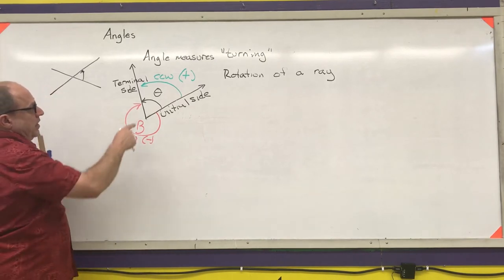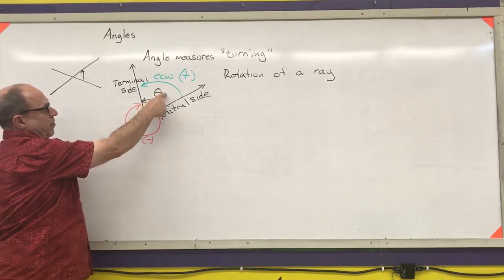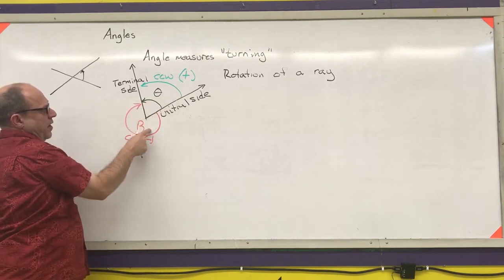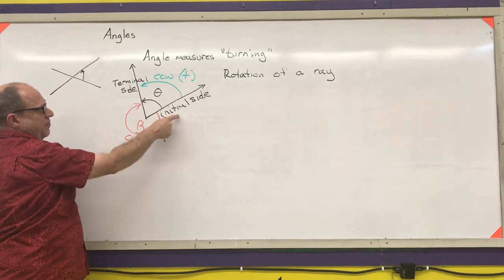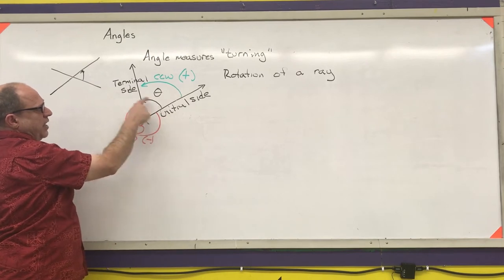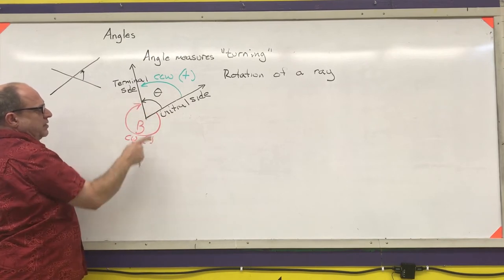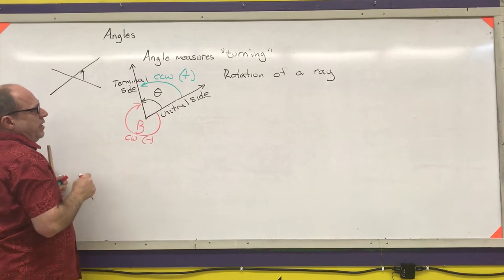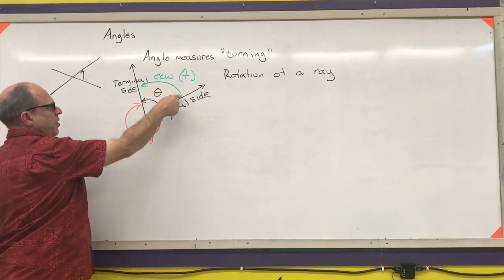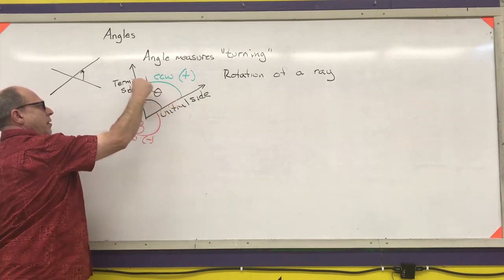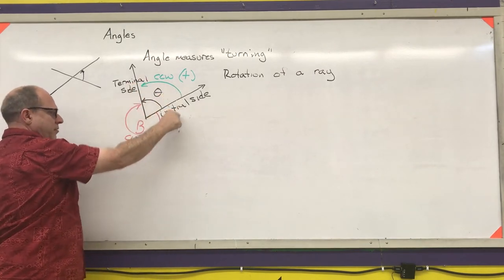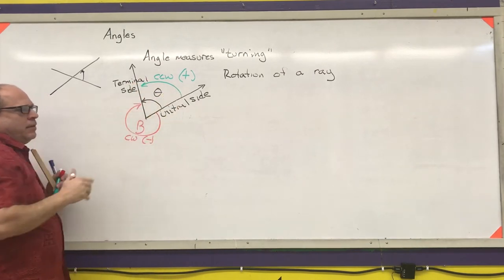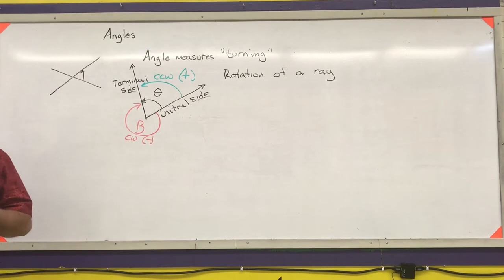Notice that angle theta and angle beta both have the same initial side and same terminal side. What's going to determine what the angle measurement is is whether I'm rotating clockwise or rotating counterclockwise.